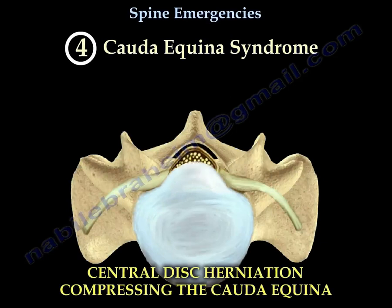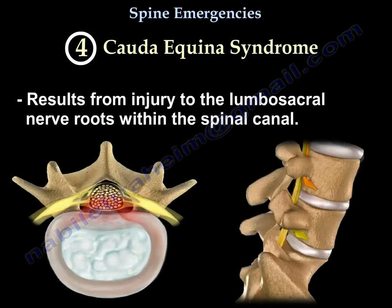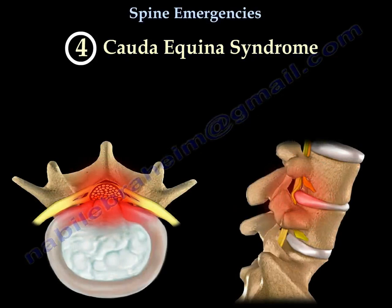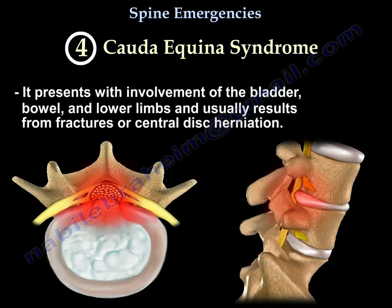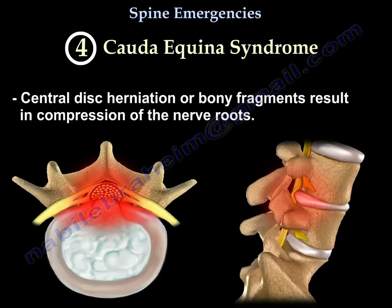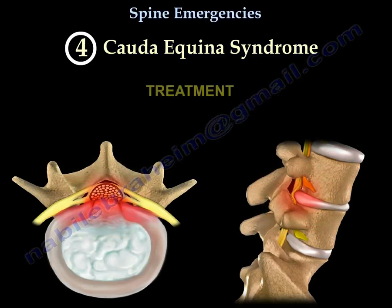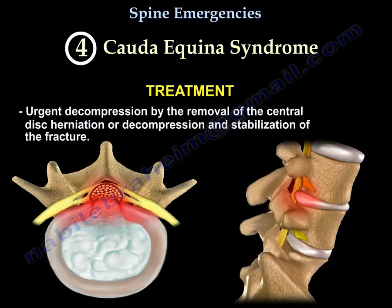Cauda equina syndrome. Here is a picture of central disc herniation compressing the cauda equina. Cauda equina syndrome results from injury to the lumbosacral nerve roots within the spinal canal. It presents with involvement of the bladder, bowel, and lower limbs, and usually results from fractures or central disc herniation. Central disc herniation or bony fragments result in compression of the nerve roots. Early diagnosis is important for eventual improvement in outcome. Treatment: urgent decompression by removal of the central disc herniation or decompression and stabilization of the fracture.